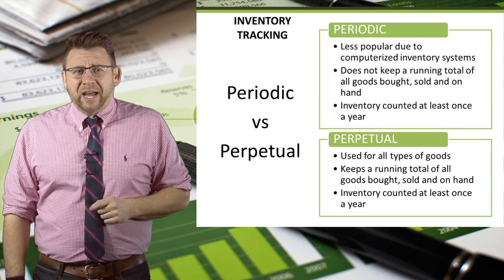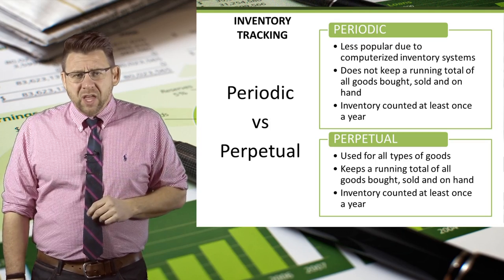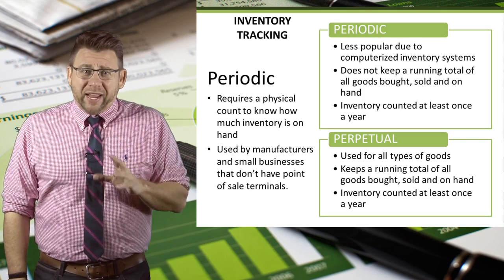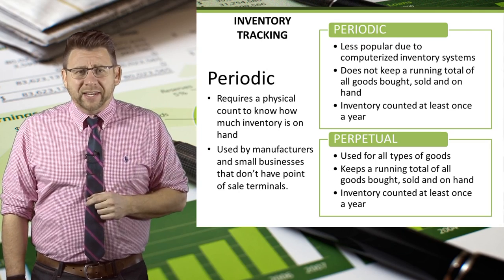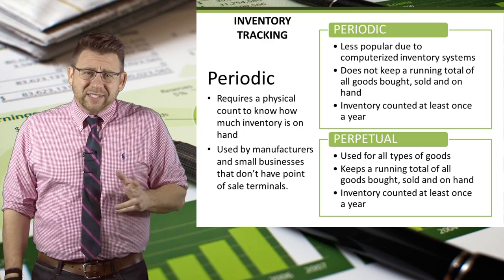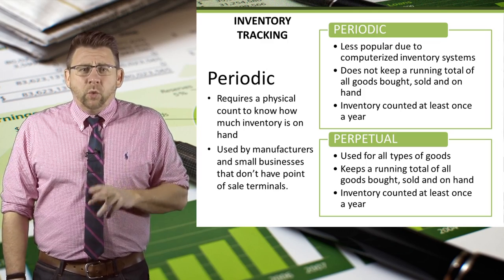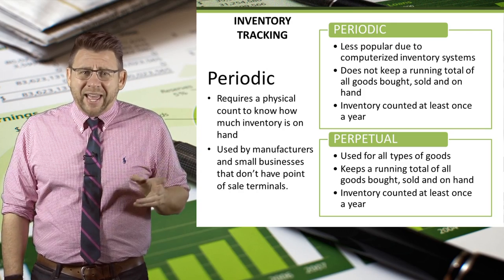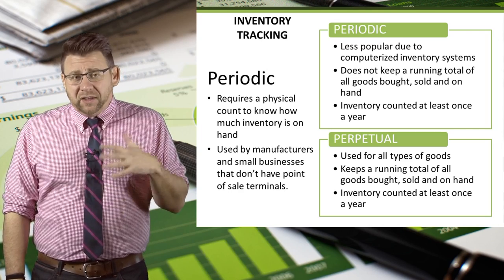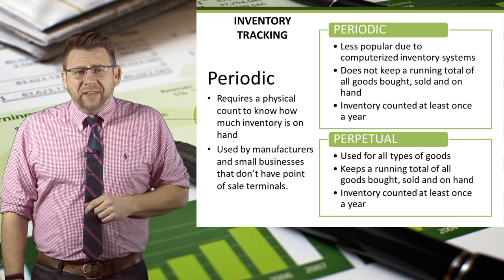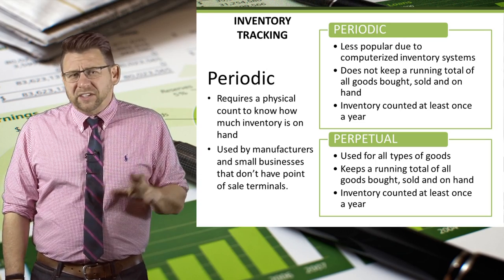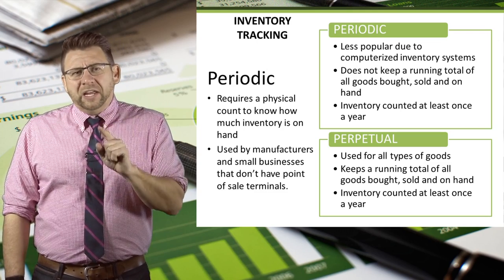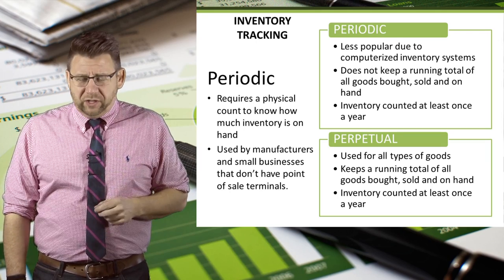The final concept related to merchandising operations is how inventory is tracked and accounted for. There are two primary methods: the periodic method and the perpetual method. The periodic inventory tracking system requires a physical count to know how much inventory is on hand. It doesn't usually use inventory tracking software, as these businesses don't have that sophisticated of software. When you buy something, it often has a price tag from a price gun, and when a cashier rings it up, your receipt only shows the number of items and the price for each. This system is used by manufacturers and small businesses without point-of-sale terminals — go to a small, independent grocery or convenience store and they'll probably still be using the periodic method.